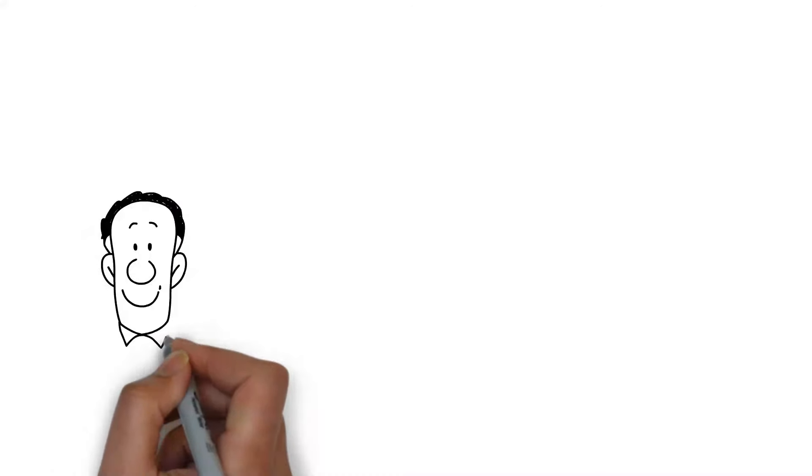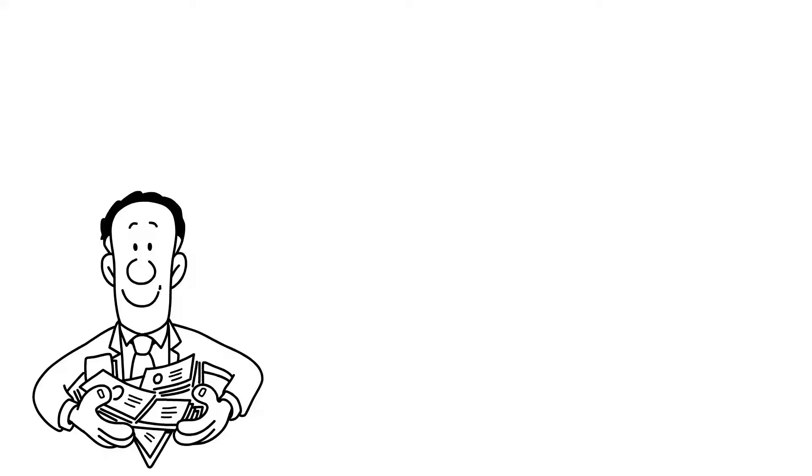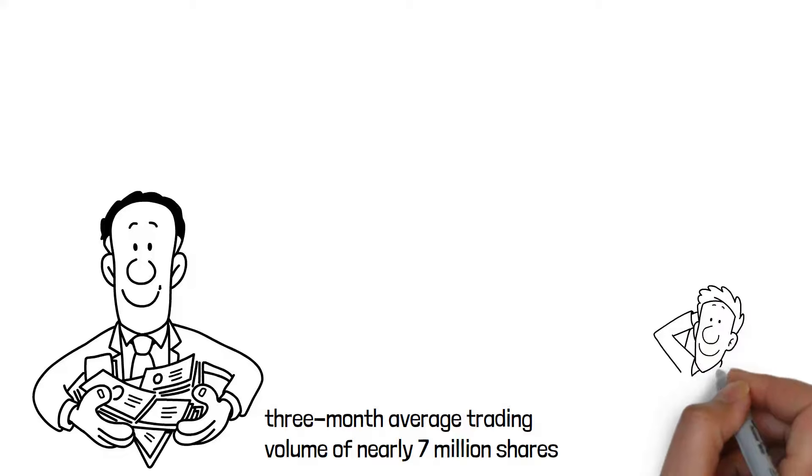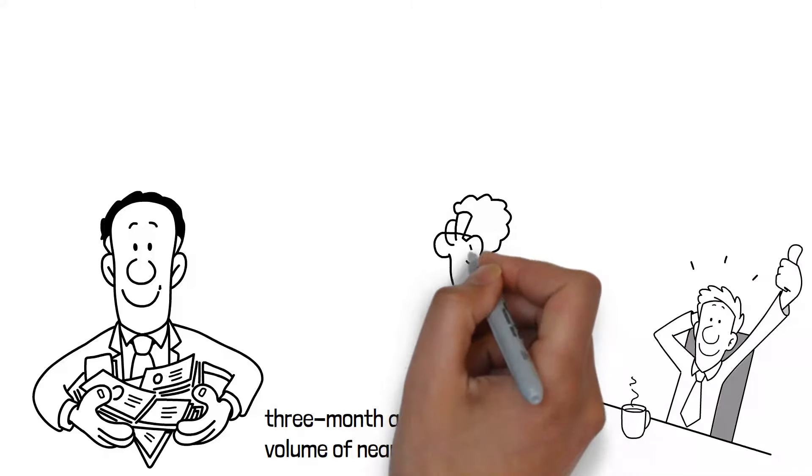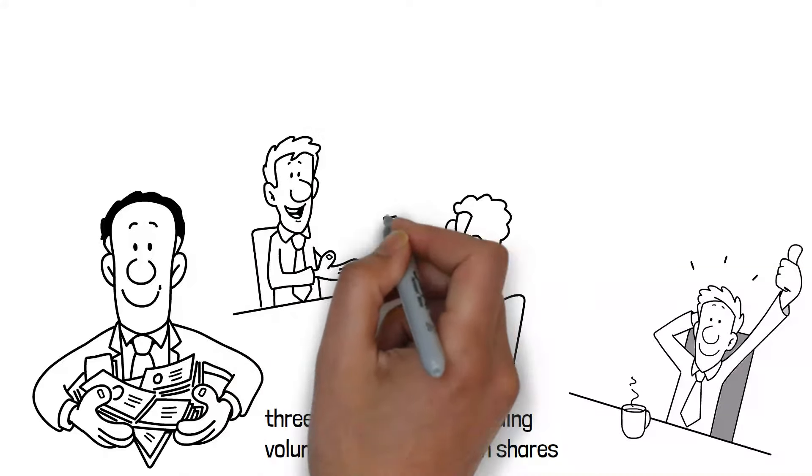In terms of liquidity, SMH is regarded as the most liquid alternative among comparable funds, with an amazing three-month average trading volume of nearly 7 million shares. This high degree of liquidity is helpful for investors.